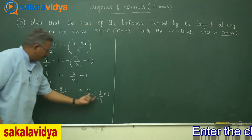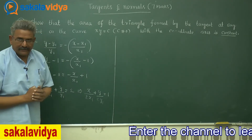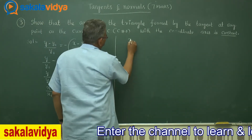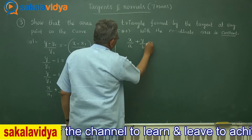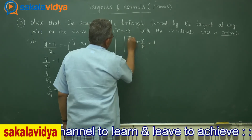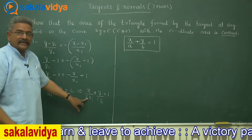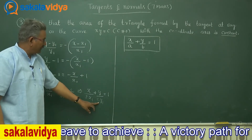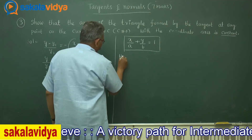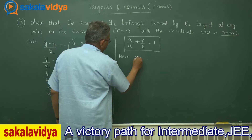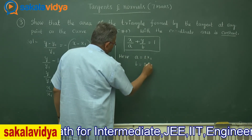This appears to be in the form X/A plus Y/B equals 1, which is called the intercept form. That means 2x1 is the x-intercept and 2y1 is the y-intercept. So here A equals 2x1 and B equals 2y1.